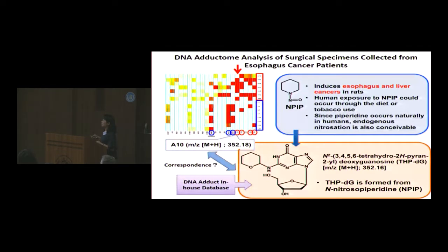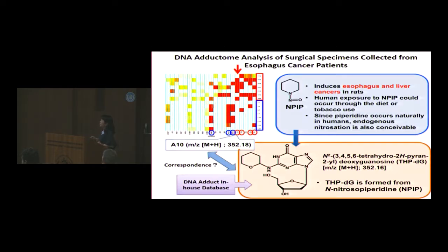In the next step, we searched for similar m/z values using our in-house database and found a very similar match. This DNA adduct is named THP-dG, and its chemical structure is shown here. THP-dG is formed from a nitrosamine compound, N-nitrosopiperidine (NPIP). Very interestingly, NPIP has already been reported to induce esophagus and liver cancers in rodents. This compound also exists in our environment — in smoke, food, and sometimes contaminating well water — so humans could be continuously exposed to it in daily life.